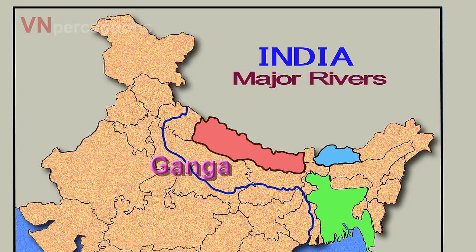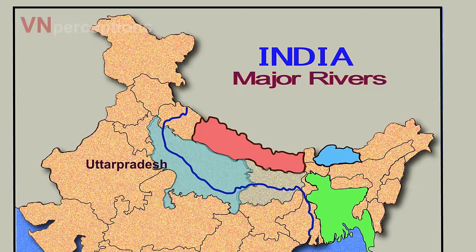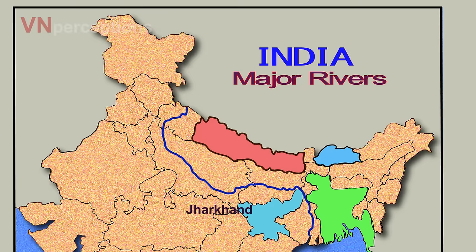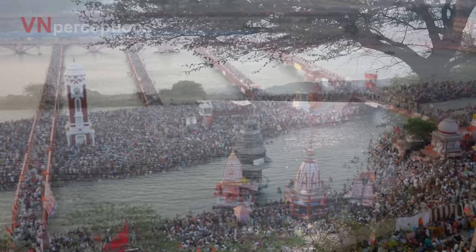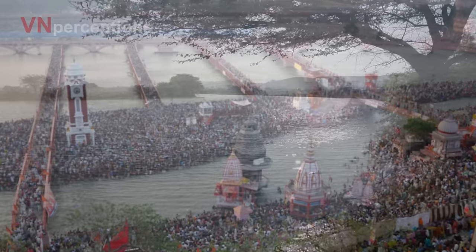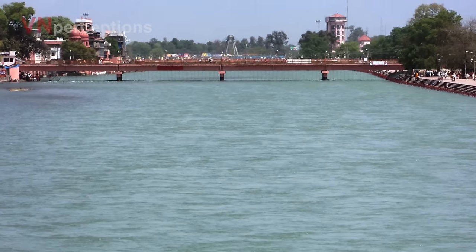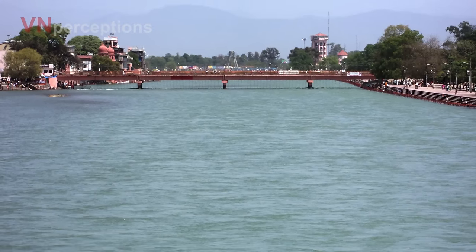River Ganga is the longest and the most important river of India. It is 2525 km long and it flows through the states of Uttarakhand, Uttar Pradesh, Bihar, Jharkhand and West Bengal. River Ganga is the most sacred river to Hindus. It is also a lifeline to millions of Indians who live along its course and depend on it for their daily needs.